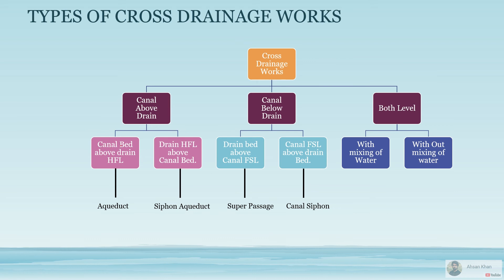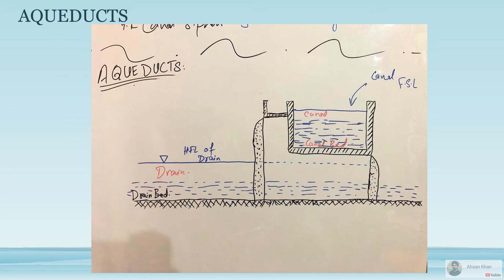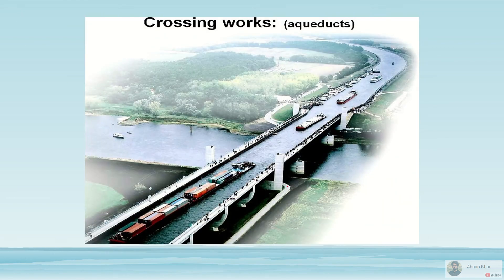Starting with canal bed above drain HFL — the aqueduct. Looking at the image, the drain is below and the canal is above it. An inspection road is also provided. You can see the high flood level of the drain is quite below the canal bed level. This is the canal crossing over the drain, which is known as the aqueduct.